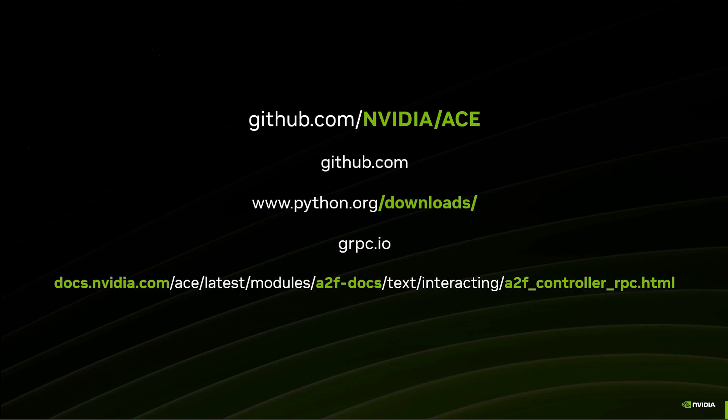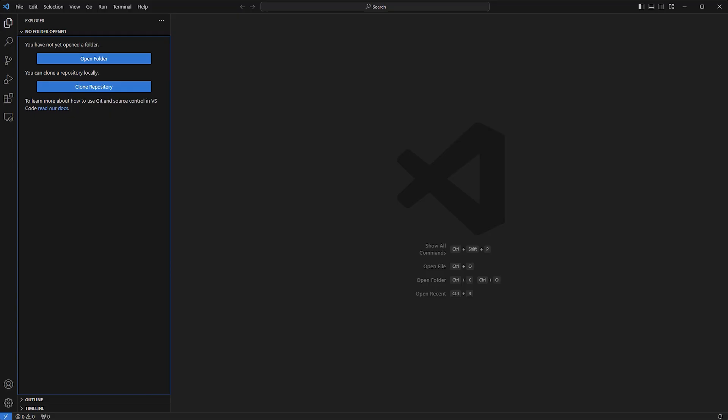If you're interested in understanding the proto files we're going to use, the protocols are all described in the documentation. You just go into the ACE documentation under A2F and you'll find all of the details for the gRPC protocols. Let's jump into Visual Studio Code.